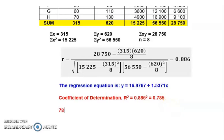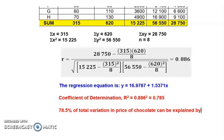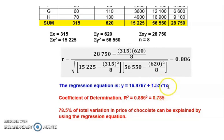So how do we interpret 0.785? It means 78.5 percent of the total variation in Y, which is the price of chocolate, can be explained by using the regression equation. By using the percentage of cocoa contained in the chocolate as the independent variable to predict Y, the regression equation can predict with around 78.5 percent accuracy. That is the purpose of the coefficient of determination.